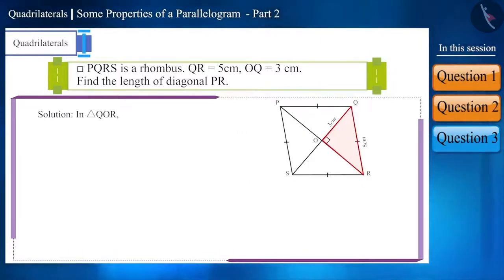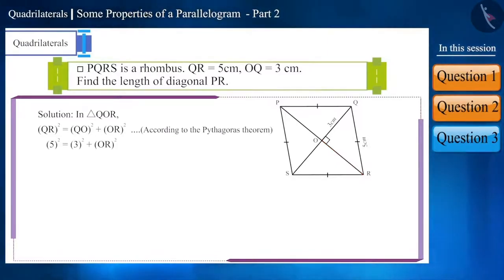So, in triangle QOR, the square of side QR will be equal to the square of QO plus the square of side OR according to the Pythagoras theorem. Now, if we keep the value of these sides, we get OR is equal to 4 cm.